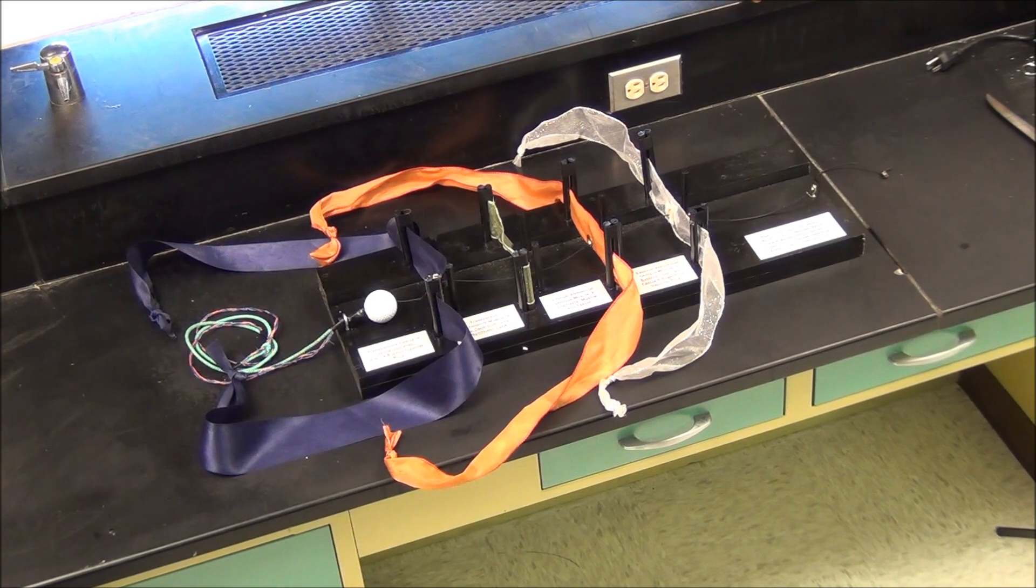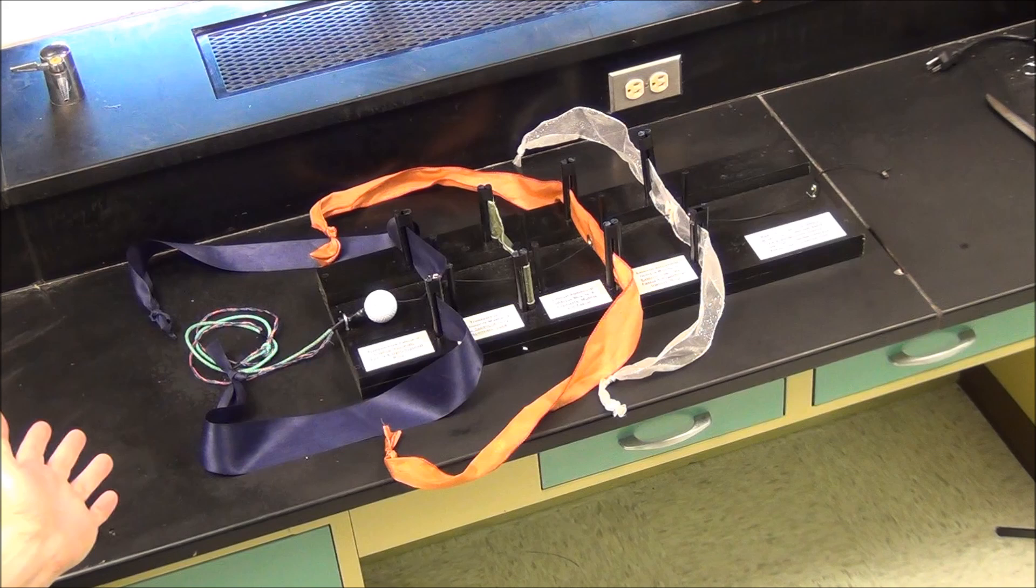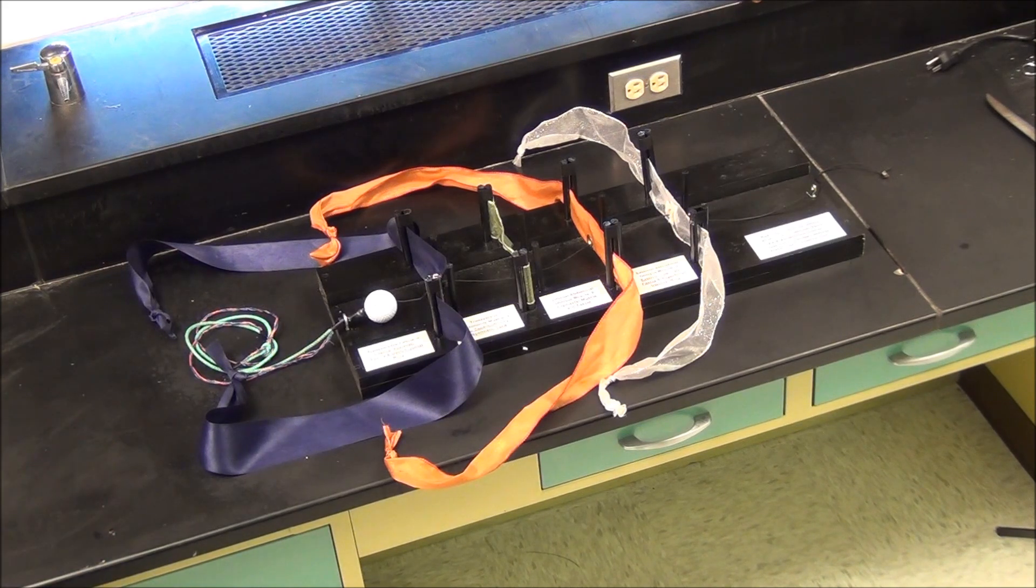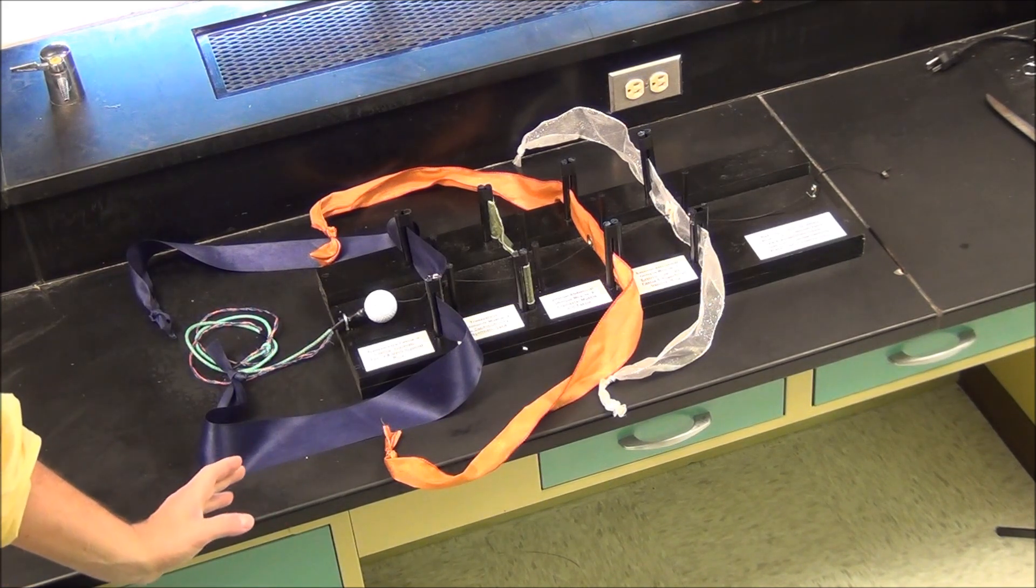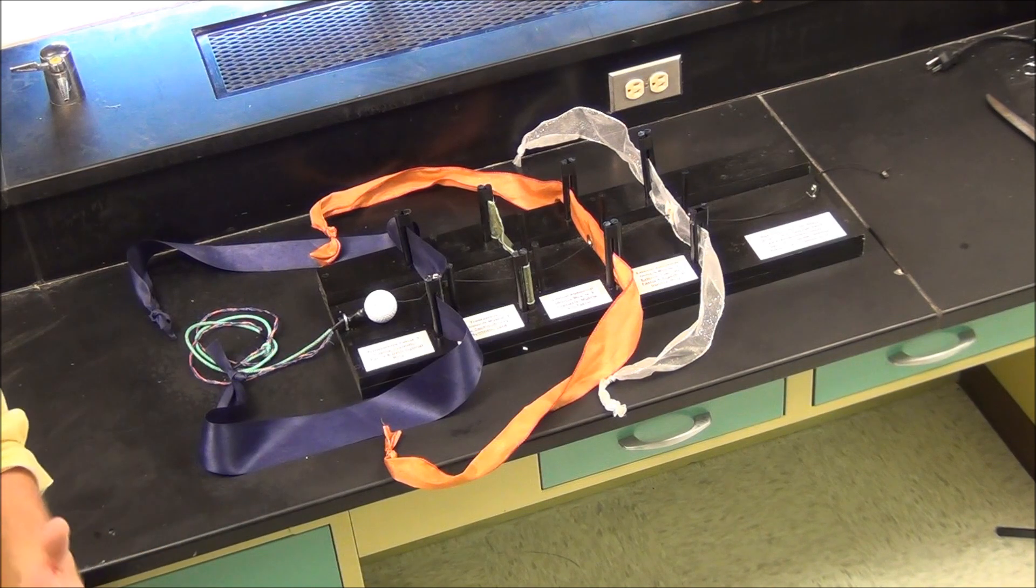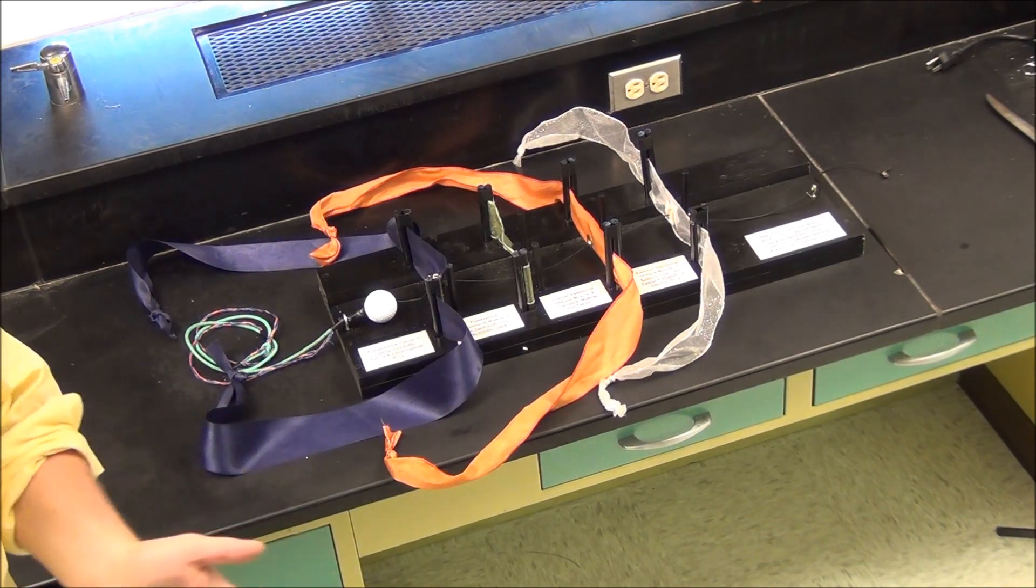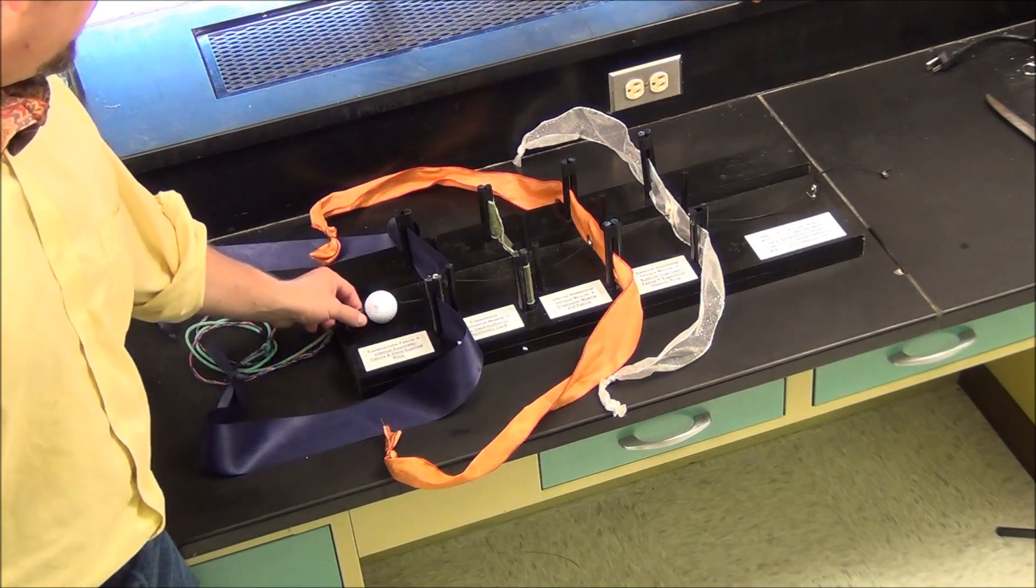All right, to make sense of how the testes descend through the anterior abdominal wall and give rise to the structure of the spermatic cord, we've got this model. Now, it's not the most super realistic thing we've ever seen, but it'll give us a good sense of what's happening and which abdominal wall layers are giving rise to layers of the spermatic cord. So, get oriented first.